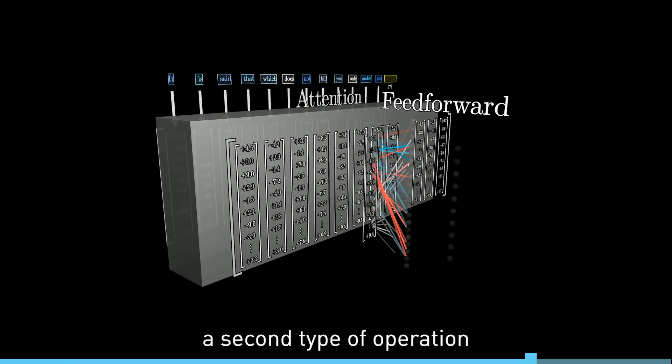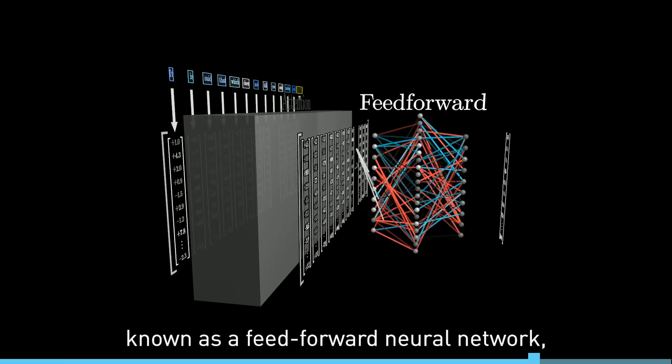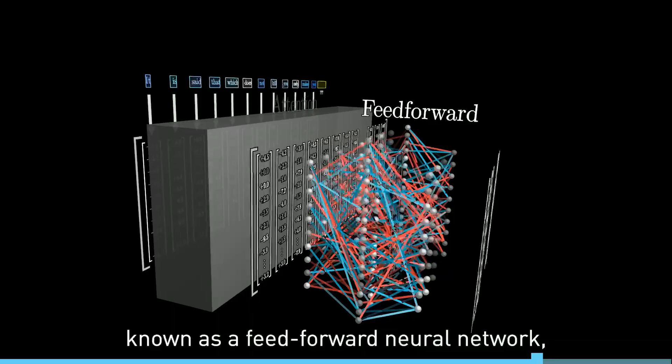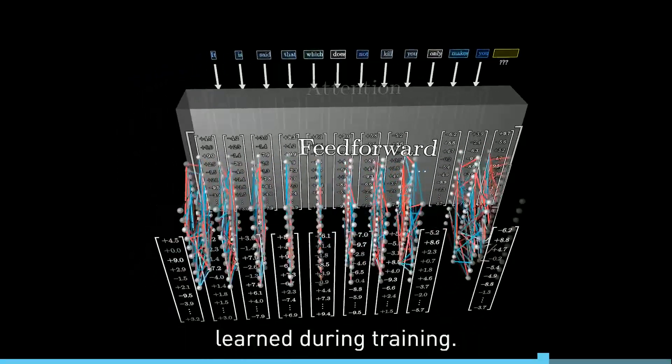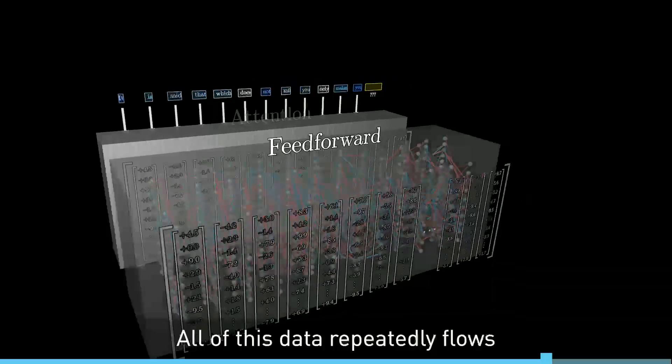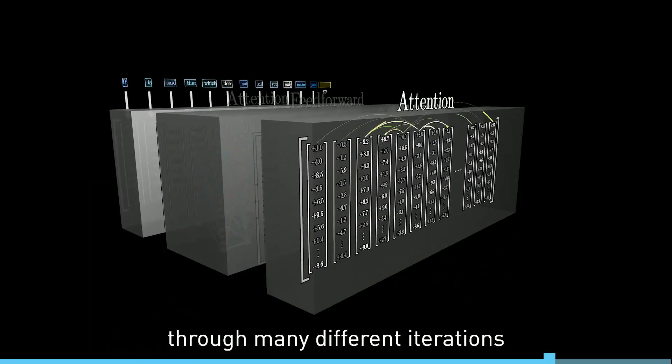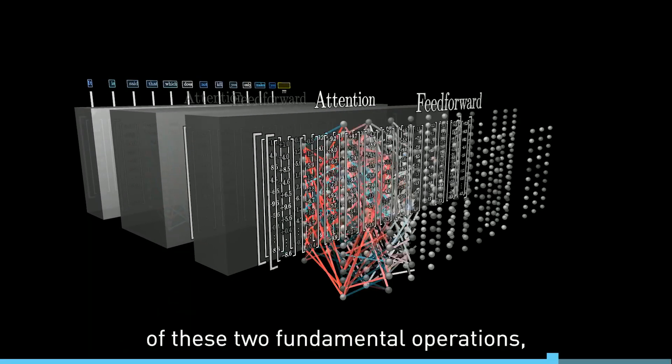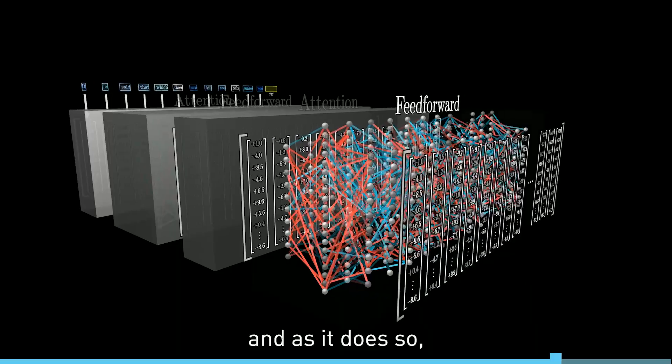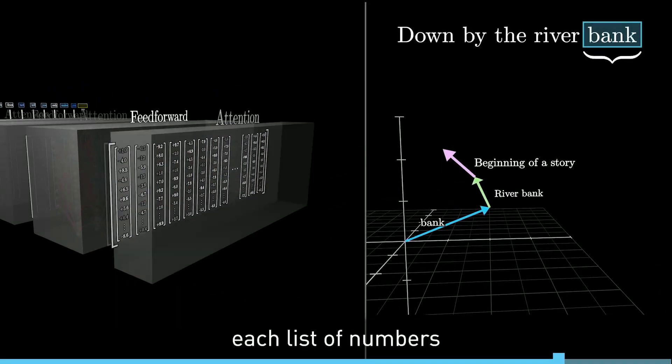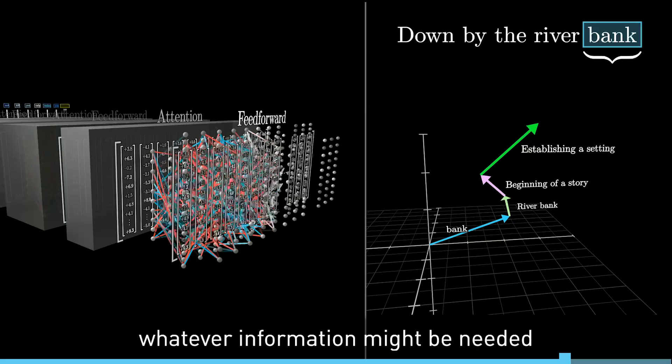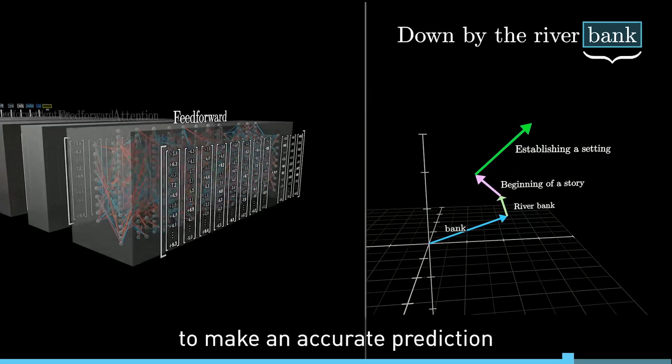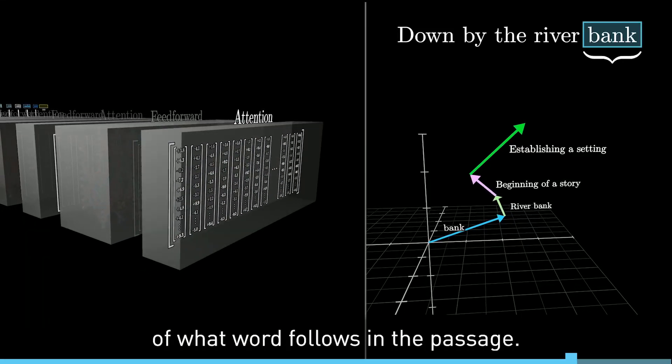Transformers typically also include a second type of operation known as a feed-forward neural network, and this gives the model extra capacity to store more patterns about language learned during training. All of this data repeatedly flows through many different iterations of these two fundamental operations, and as it does so, the hope is that each list of numbers is enriched to encode whatever information might be needed to make an accurate prediction of what word follows in the passage.